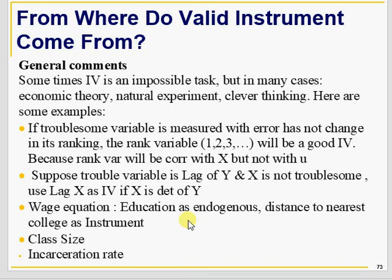If your troublesome variable is measured with an error but it does not change the ranking of your explanatory variable, you can use the rank variable as an instrument because it will be correlated with X but not correlated with U. If you have a lag of Y as an endogenous variable and X is not troublesome, you may use a lag of X as an instrument.